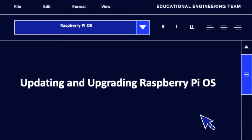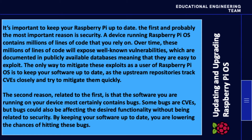Updating and Upgrading Raspberry Pi OS. It's important to keep your Raspberry Pi up to date. The first and probably the most important reason is security. A device running Raspberry Pi OS contains millions of lines of code that you rely on. Over time, these millions of lines of code will expose well-known vulnerabilities which are documented in publicly available databases, meaning that they are easy to exploit. The only way to mitigate these exploits is to keep your software up to date, as the upstream repositories track CVEs closely and try to mitigate them quickly.